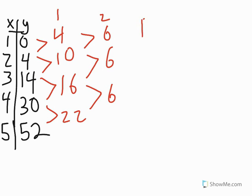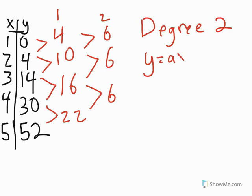That means we have a degree of 2, which means the standard form of this polynomial is going to be y equals ax squared plus bx plus c. Since we have our table of x and y values, we know what x and y are, and we're going to have to figure out what a, b, and c are.